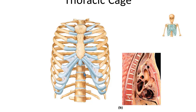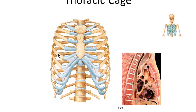Looking at the thoracic cage, it's made up of the sternum and the ribs. The sternum, otherwise known as the breastbone, lies directly over the heart — during open heart surgery, the sternum must be separated to access the heart. We have 12 pairs of ribs. Ribs 1 through 7 are called the true ribs, and they have a direct connection to the sternum.